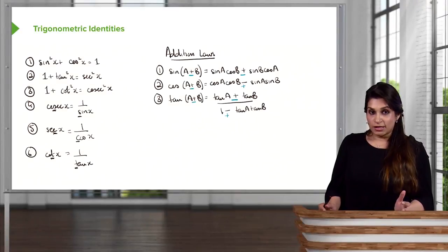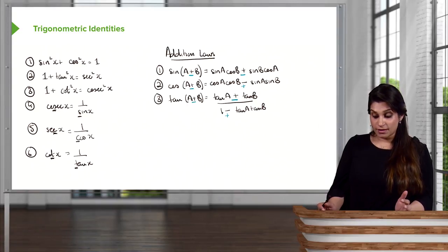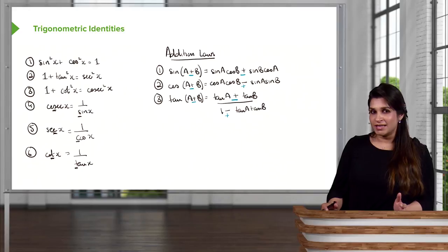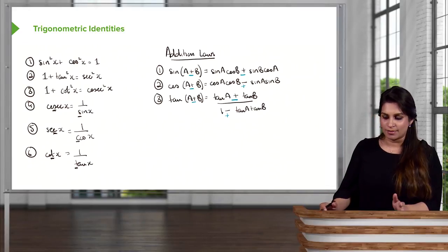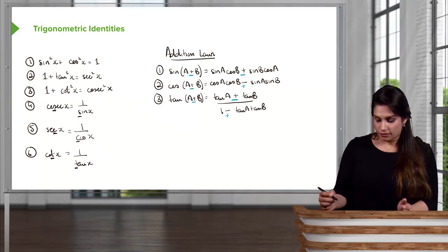There's one more thing that I need to tell you before we move on to the next proof. Now this isn't part of the identities and you won't really need to prove it at any point unless you're doing advanced mathematics. And that is proving the limit.